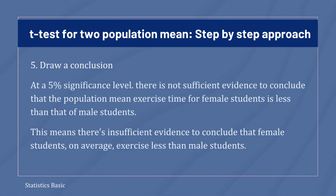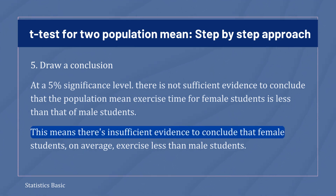Now, in the fifth and final step, we will conclude the summary of the hypothesis test. Since the null hypothesis failed to be rejected at a 5% significance level, there is not sufficient evidence to conclude that the population mean exercise time for female students is less than that of male students. This means there is insufficient evidence to conclude that female students, on average, exercise less than male students.